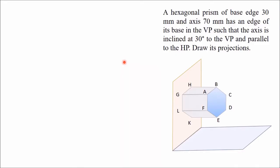Welcome. Let's learn how to draw orthographic projections of a solid. I have taken an example of a hexagonal prism of base edge 30 mm and axis 70 mm. It has an edge of its base in the VP such that the axis is inclined at 30 degrees to the VP and parallel to the HP.